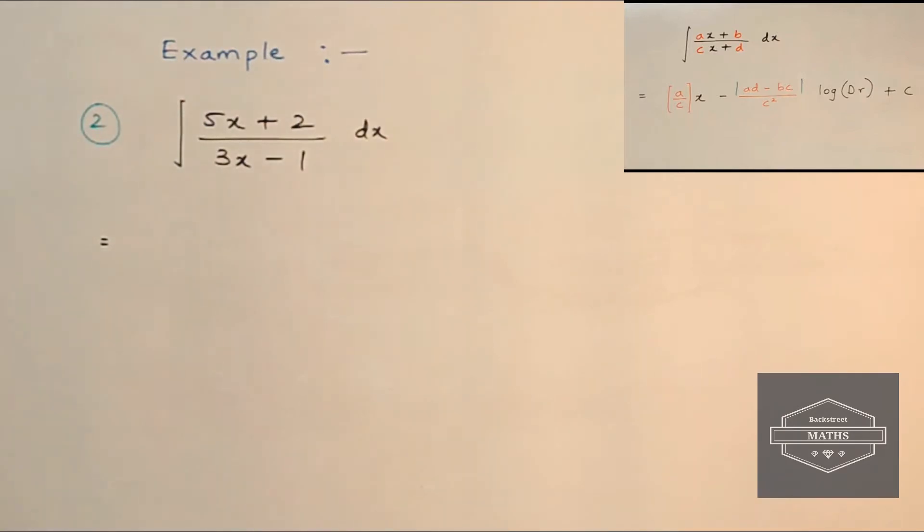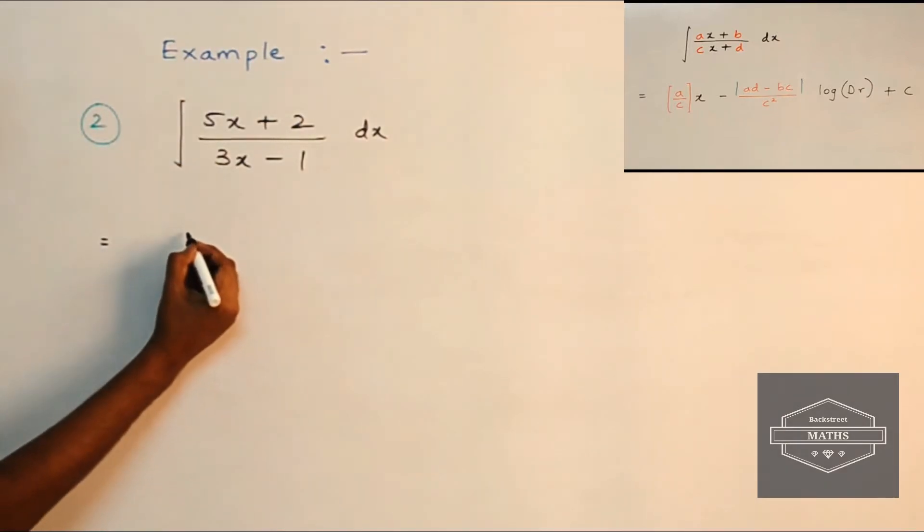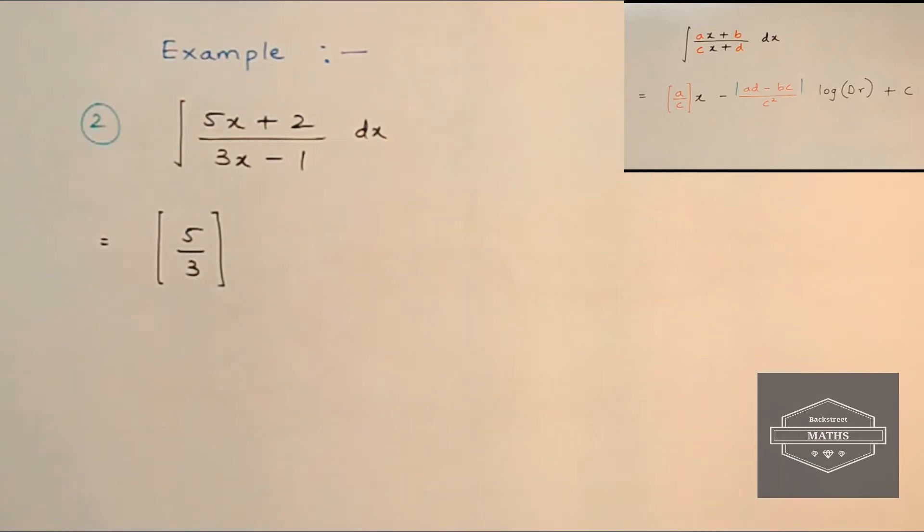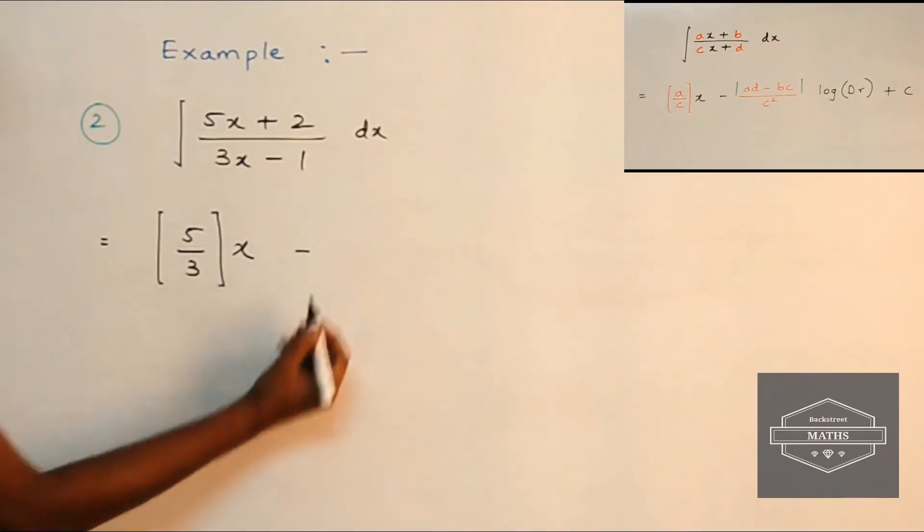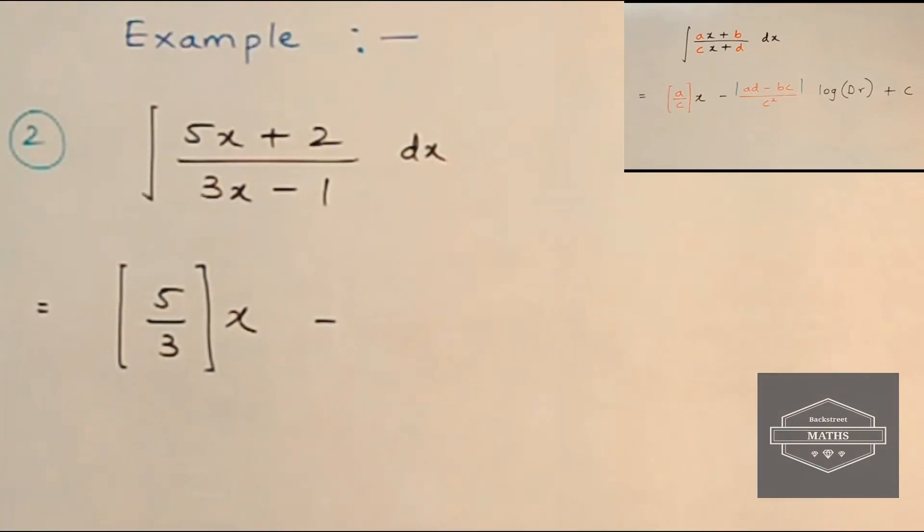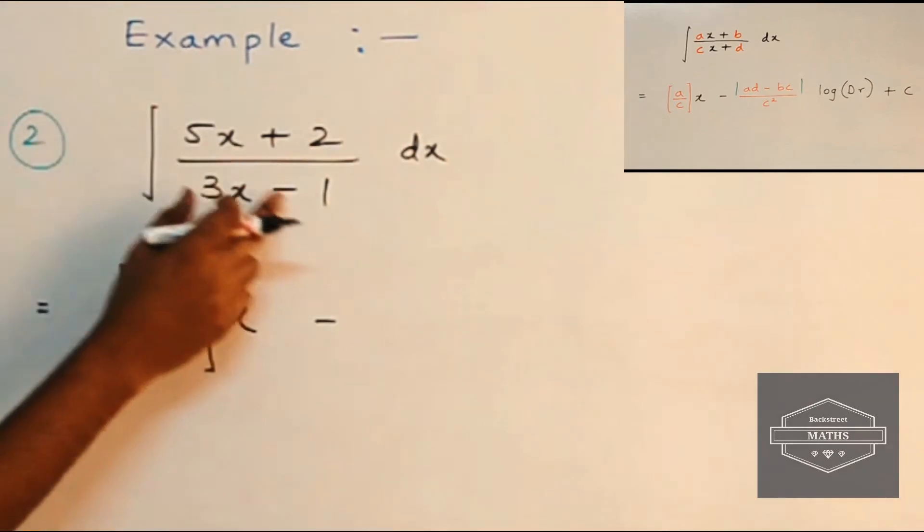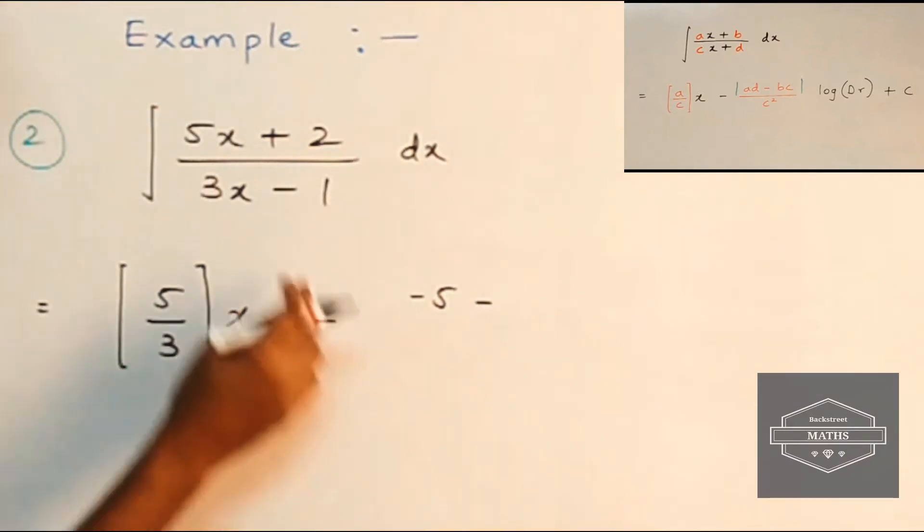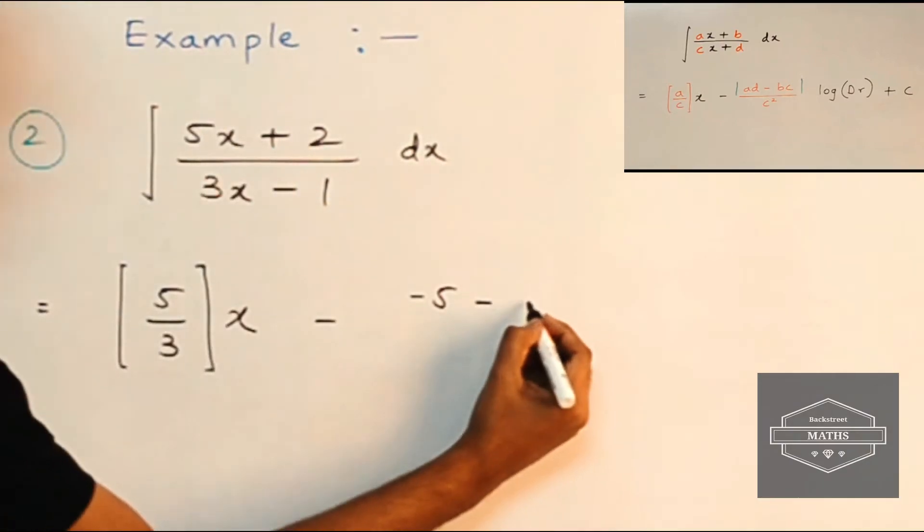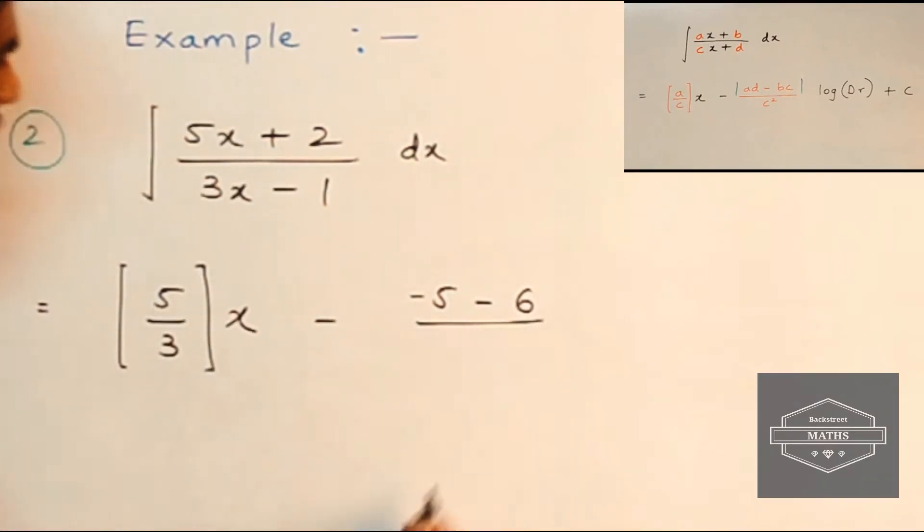In the first term we have a upon c, so here it will be 5 upon 3, okay, this is the first term. And we multiply our first term with x minus. In the second term we follow a crisscross pattern, so here it will be 5 into minus 1, it will be minus 5 minus 2 into 3. 2 times 3 is 6 upon 3 square, 3 square is 9.